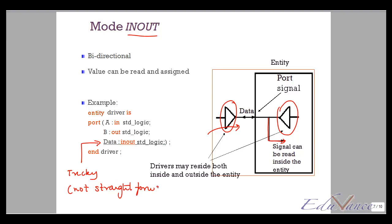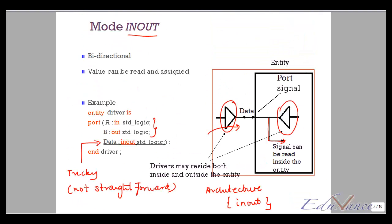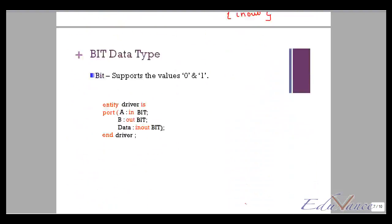Hence, if you choose to model something like an inout, I would suggest using an individual in and out and then, as part of your architecture, functionally make it of the type inout. We will discuss that in a future lecture. So I hope that these three modes were clear. I have decided not to discuss the buffer type because it's a little more complex and when you're starting out to learn VHDL, it's not really that important to know the buffer mode.